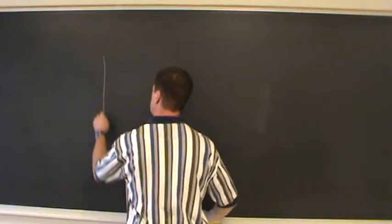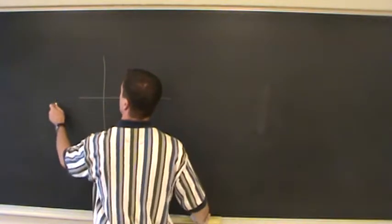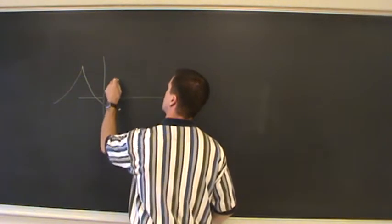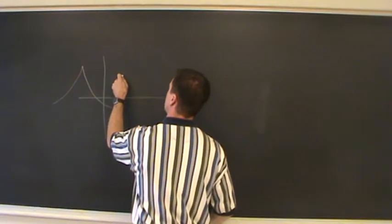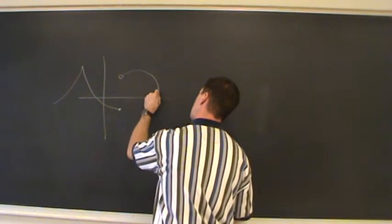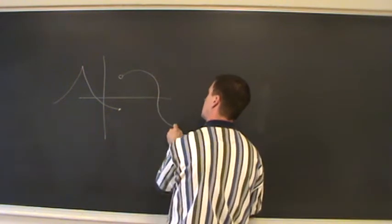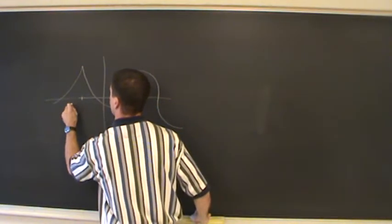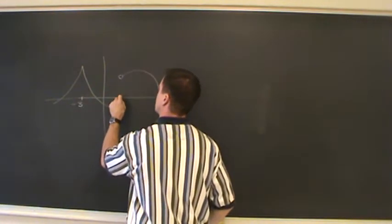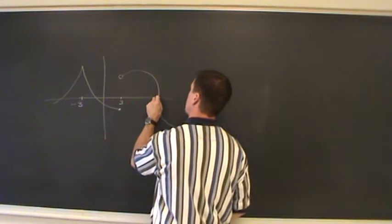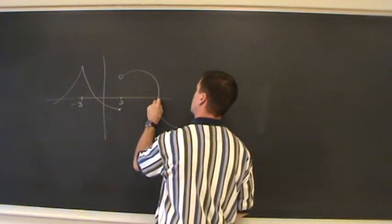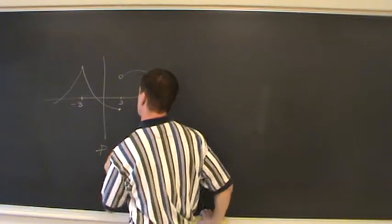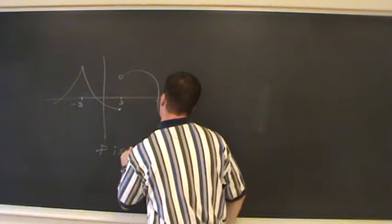I'm going to draw a picture of a general function. This function has a cusp here, comes down here, has a discontinuity there, maybe gets really vertical here, and then goes on. I'll make up some x values: this is at x equal to negative three, this is at x equal to three, and this is at x equal to seven. Where is this function not differentiable?